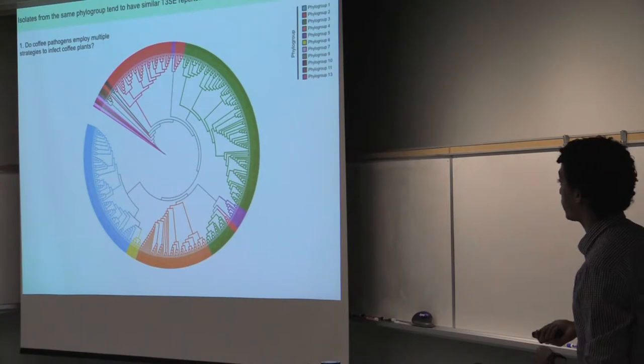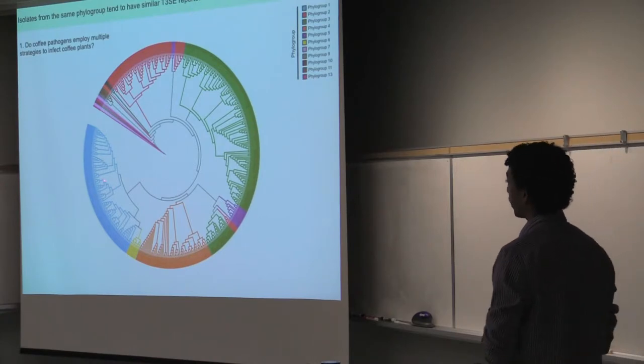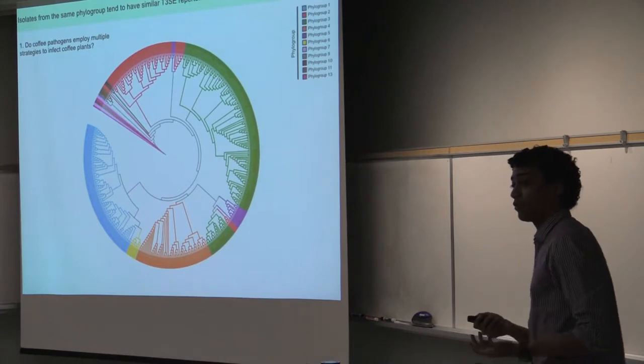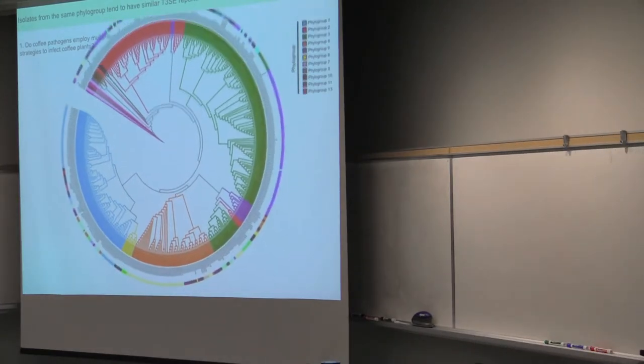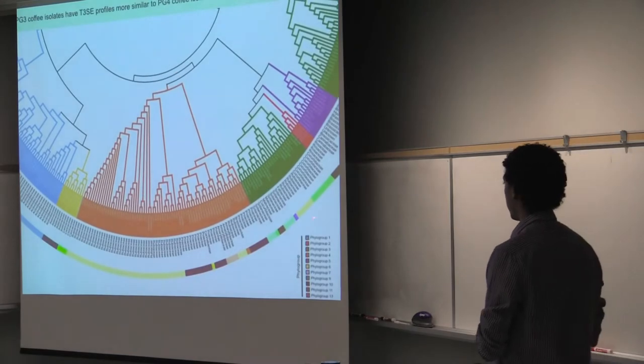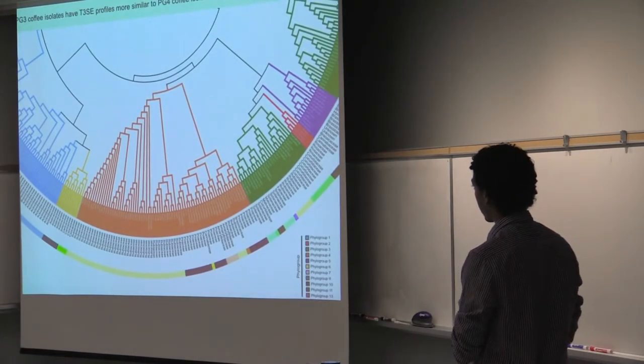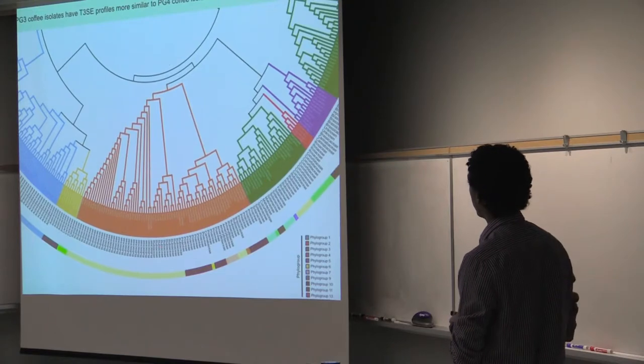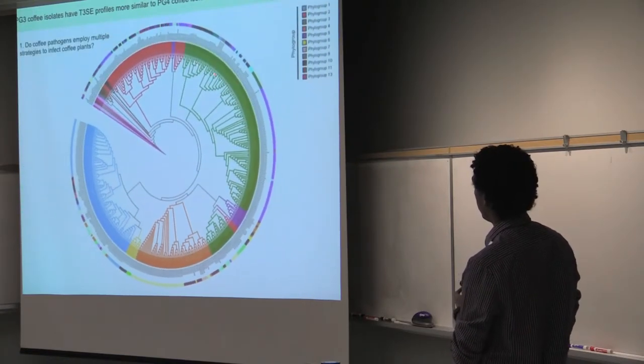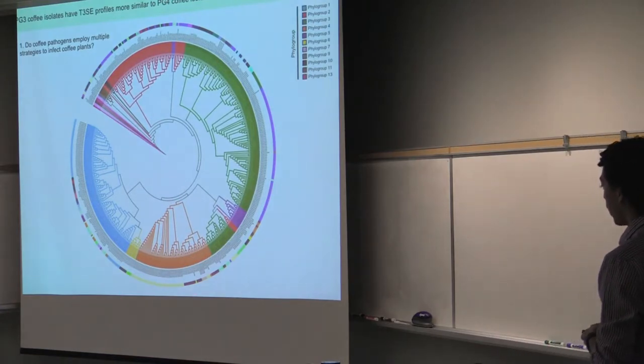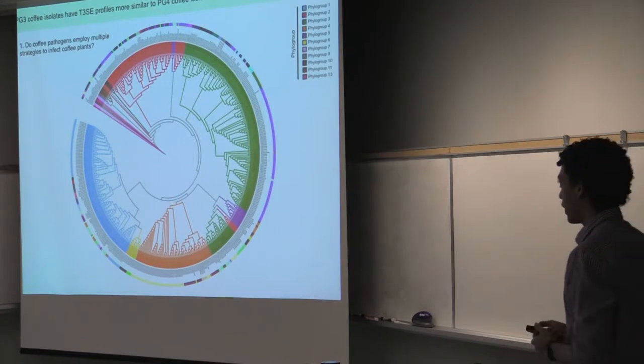And the results for that analysis are shown here. And what we can see right away is that isolates from similar genetic backgrounds tend to have a similar type 3 effector profile. But what is interesting for us is that our coffee isolates here, which we see on phylogroup 3, have a profile more similar to the ones on phylogroup 4 than to the rest of phylogroup 3. So it seems like you have one strategy here that both of these bugs employ that seems to be quite similar to each other.